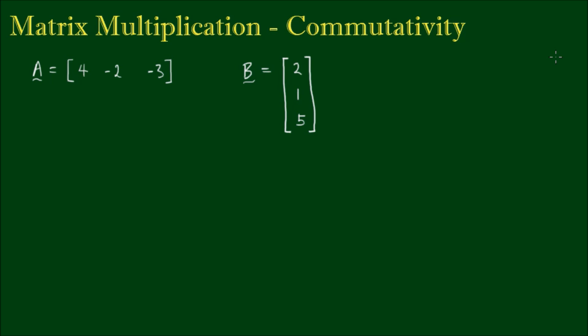So here we have two matrices. Matrix A is a 1 by 3 matrix, and matrix B is a 3 by 1 matrix. Later on when we study vectors we'll refer to these as row and column vectors, but for now all matrix operations still apply to these special matrices.